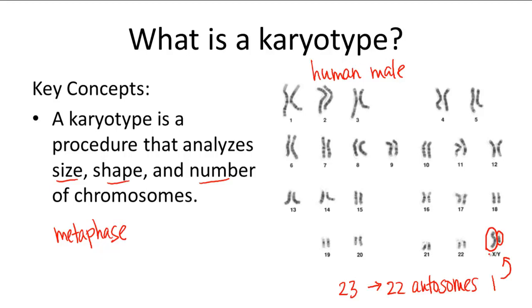Karyotypes can be important tools for analyzing and researching an individual's genetic makeup, particularly for identifying genetic diseases. For example, Down syndrome is caused by having a partial or full extra 21st chromosome, so it would look something like this — you'd have another chromosome right there — and a karyotype quickly helps identify this condition.